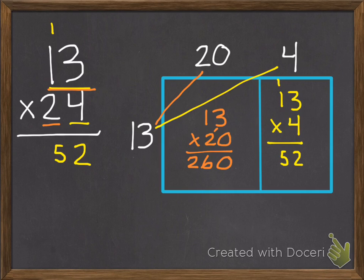Which is the same thing we did with our model, that 13 times the 20. So when we have a 0 in the ones and we multiply the 0 times the 13, we have 0. 2 times 3 is 6. 2 times 1 is 2. So we get 260. We do the same thing when we're using standard method.